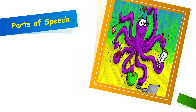Look at this picture. What is it? It is an octopus. And how many legs does it have? It has eight legs. You know, just like an octopus has eight legs, parts of speech are also eight.